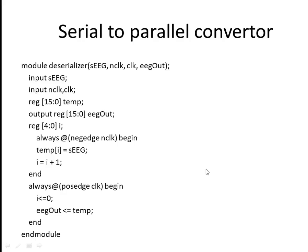In this video, we will see how to write parallel code for a serial-to-parallel converter. The basic input is serial, meaning data is coming serially and we need to convert it to parallel.